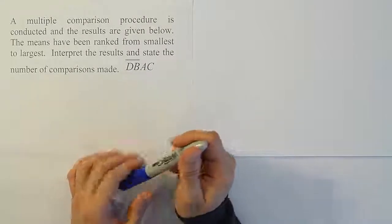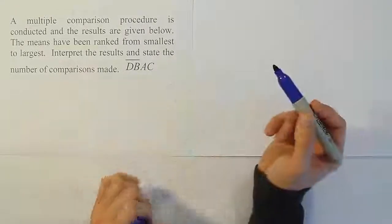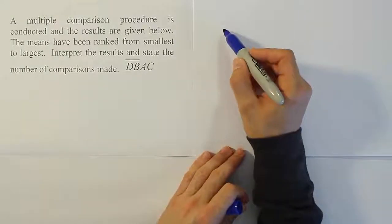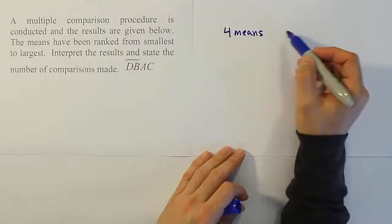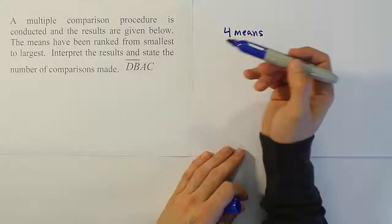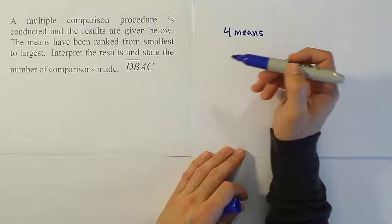So number of comparisons made. We had four means, right? So if you have four means, you're going to be pairing them up two at a time, because the multiple comparison procedure compares each mean to every other mean in the list.